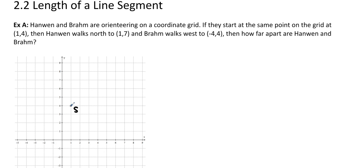Hanwin walks north to (1,7). By the way, if you don't have graph paper, you need to bring some to class tomorrow. So let's call that H right there, (1,7). Braum walks west to (-4,4), right here, call it B.